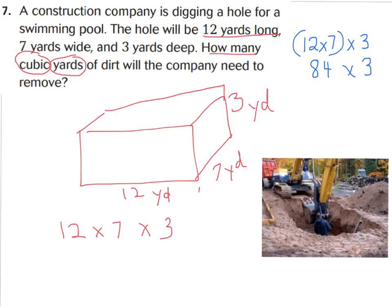Now I can take 84 and multiply it by 3. So 84 times 3 is 252 cubic yards. That's how much dirt they would have to scoop out to create that swimming pool.